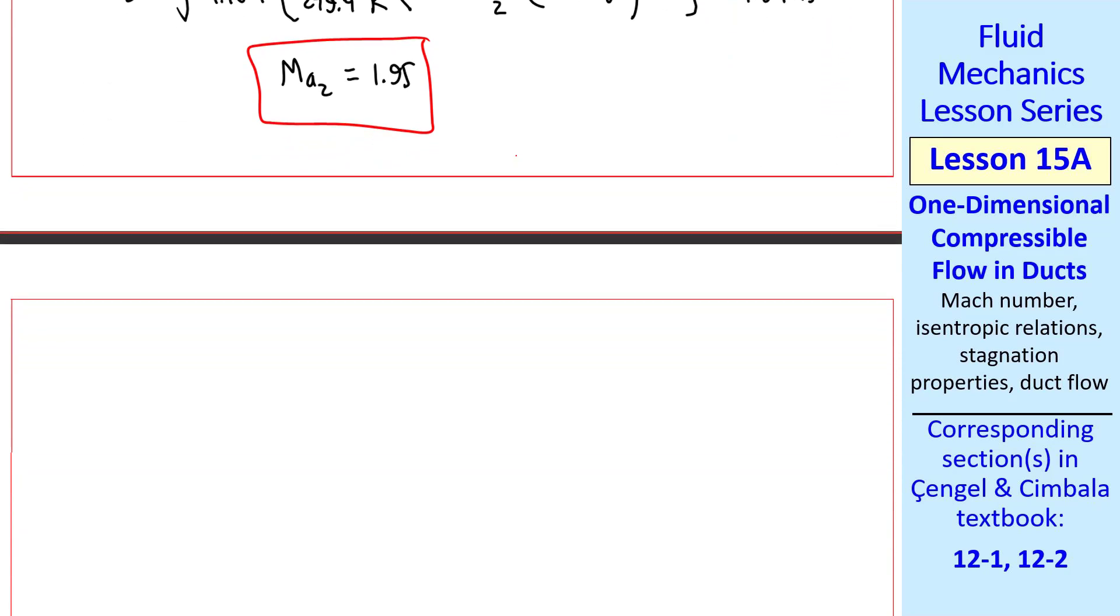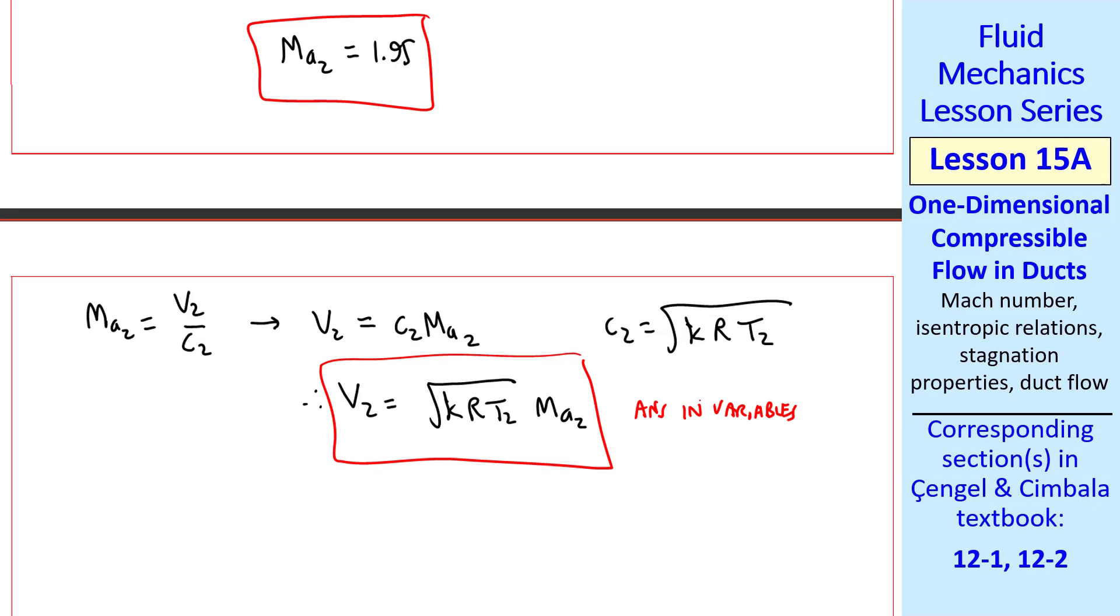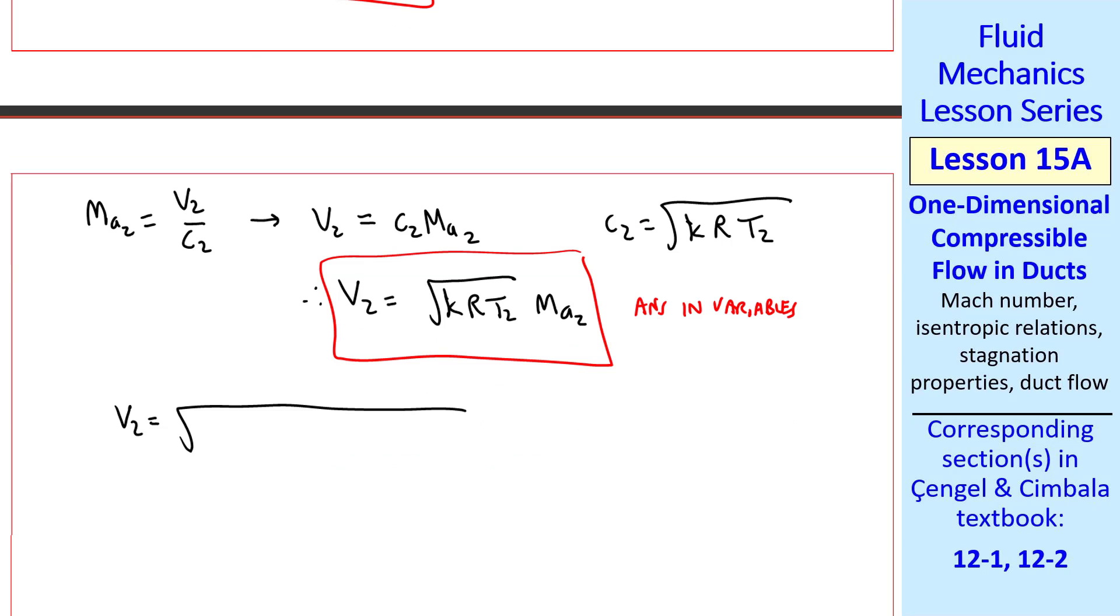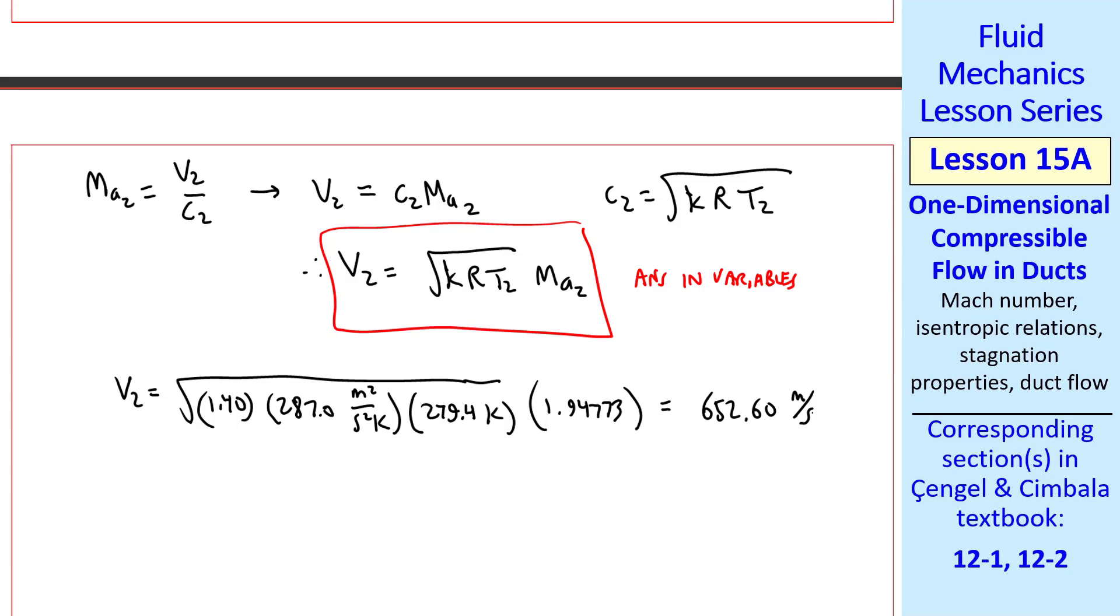Finally, we need to calculate V2 from the definition of Mach number. V2 is C2 times Ma2, but C2 is the square root of KRT2, so V2 is the square root of KRT2 times Ma2, which is our answer in variables. Plugging in the numbers and using the Mach number we calculated previously, we get about 653 meters per second.